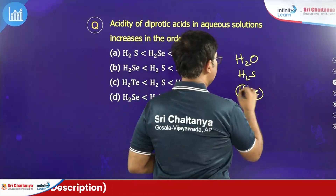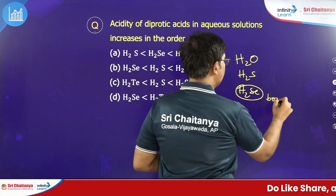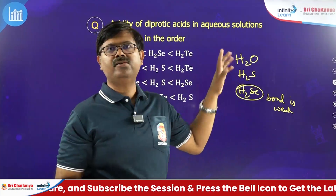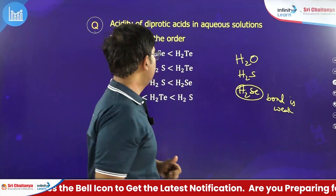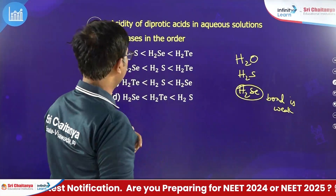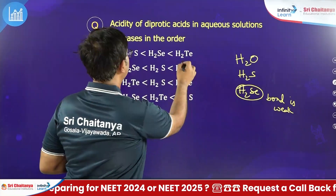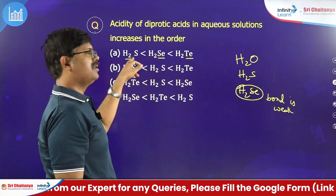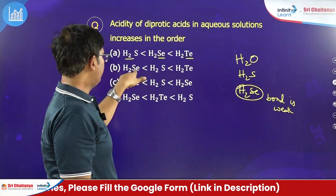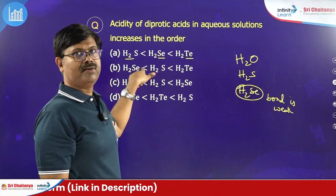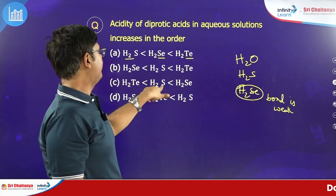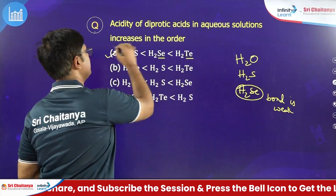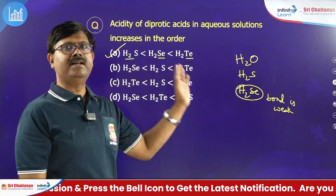So the bonds going down are weak, and it easily breaks down as H+. Whereas in H2O the O-H bond is strong and difficult to break as H+. Therefore acidic strength increases as you go down the group. Tellurium is below, then selenium, then sulfur. The answer is the first option — the correct order is H2S < H2Se < H2Te.